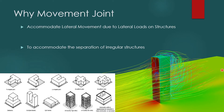When there are irregular structures, we have to provide Movement Joints. You can see here different kinds of structures. Due to this irregularity, we separate these structures based on the structural arrangement. Here we may have a joint, here may have a joint, and likewise there may be joints in the structures. In such situations, we need to have a Movement Joint.